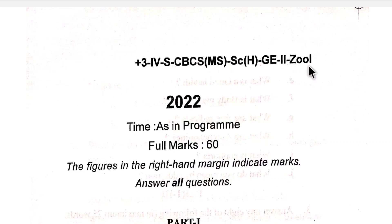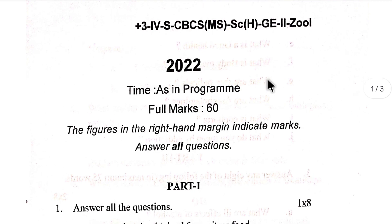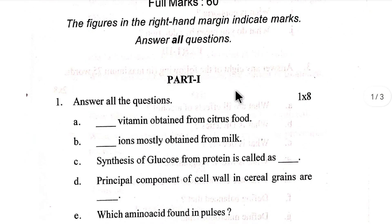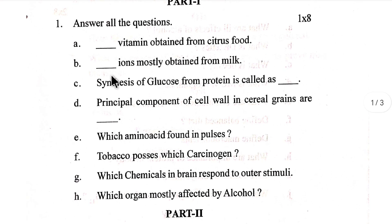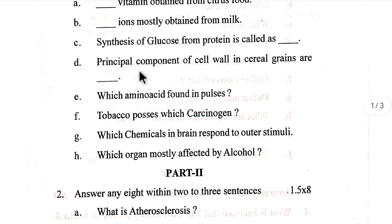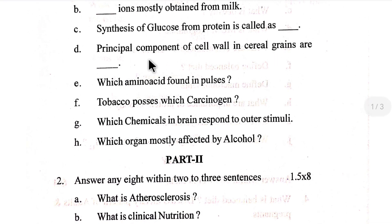Fourth semester zoology general elective. Question one: dash — vitamin obtained from citrus food; dash — ions mostly obtained from milk; synthesis of glucose from protein is called as dash; principal component of cell wall in cereal grains are dash.